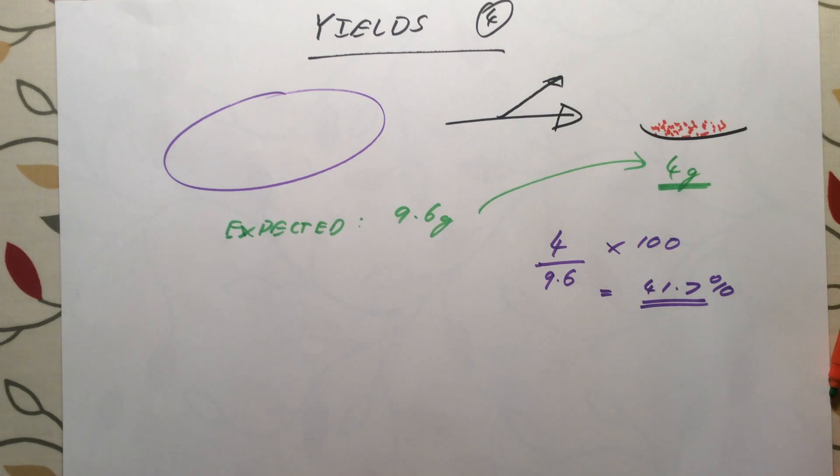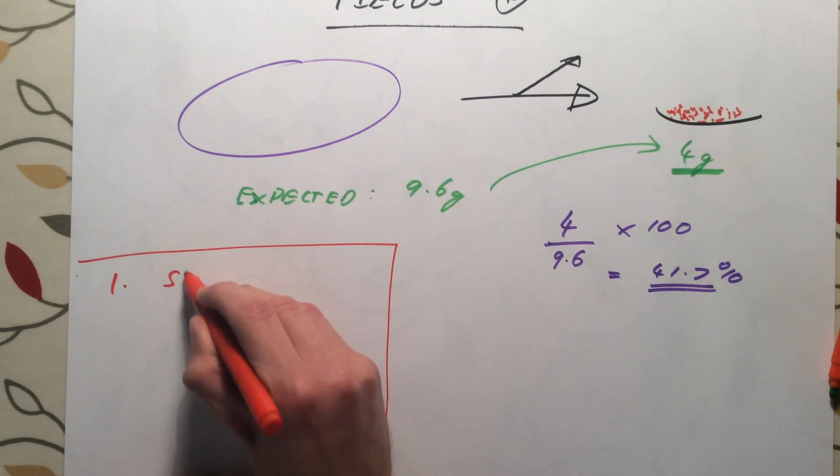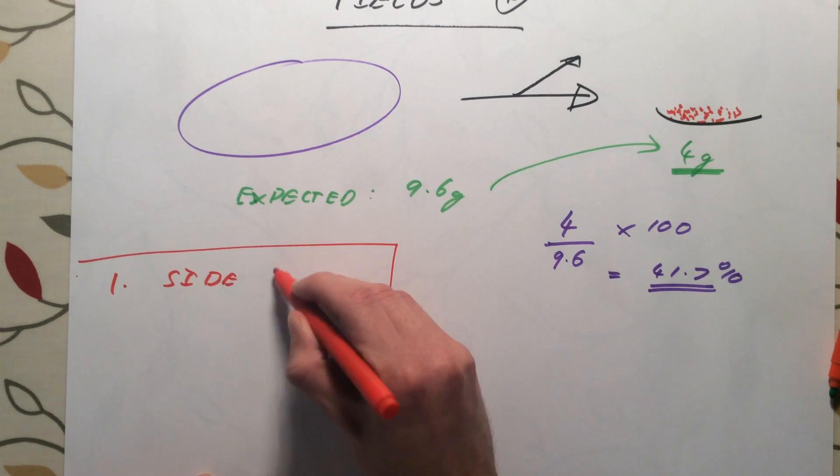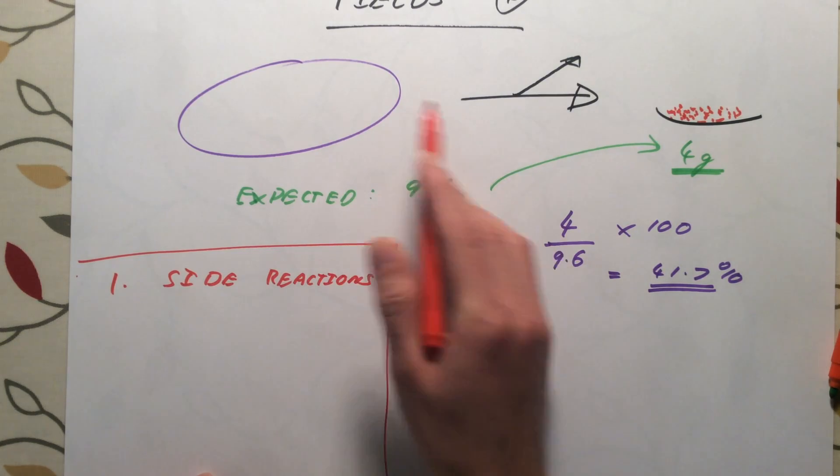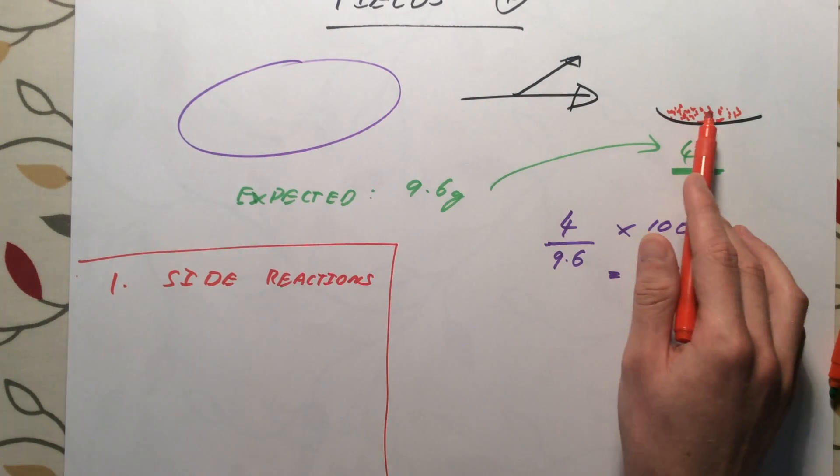So our first reason why we might not get exactly what we expect is because of side reactions. We might make something that we don't expect, so this will reduce the number of atoms available to make our products and we'll get less than 100% yield.